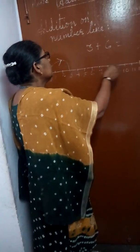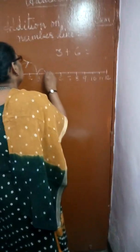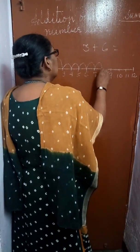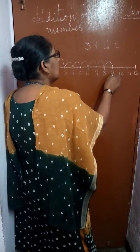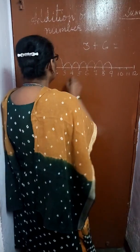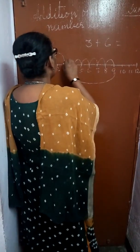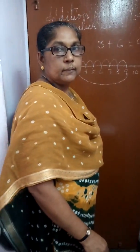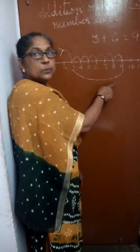Then again you have to make 6 jumps: 1, 2, 3, 4, 5, 6. So, where you are reaching, children? You are reaching here at 9. So, this is called 3 plus 6 is equal to 9.